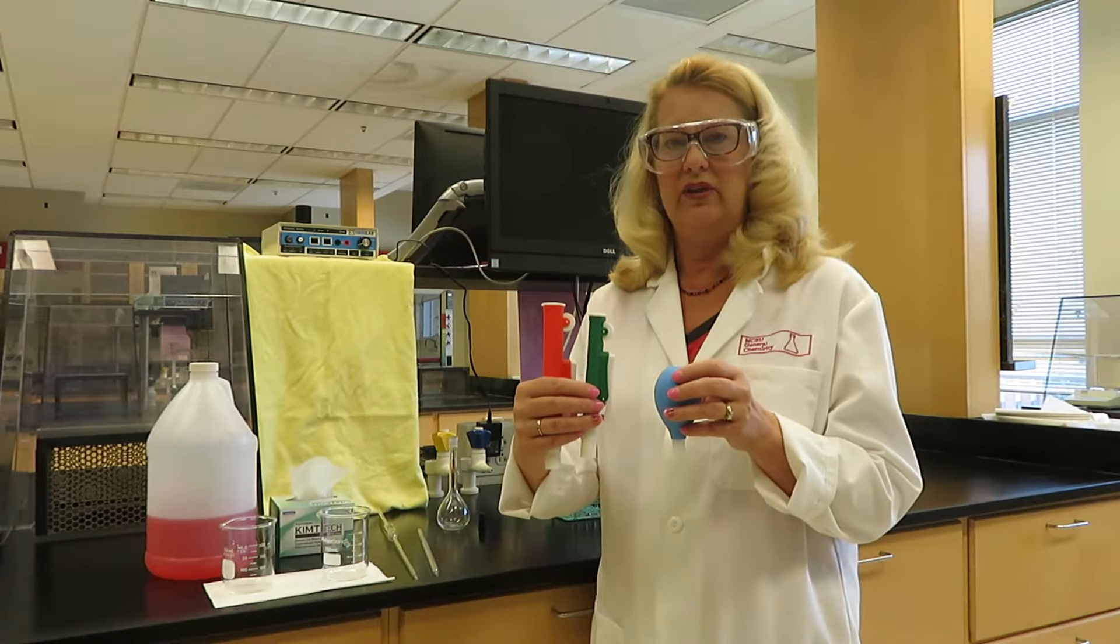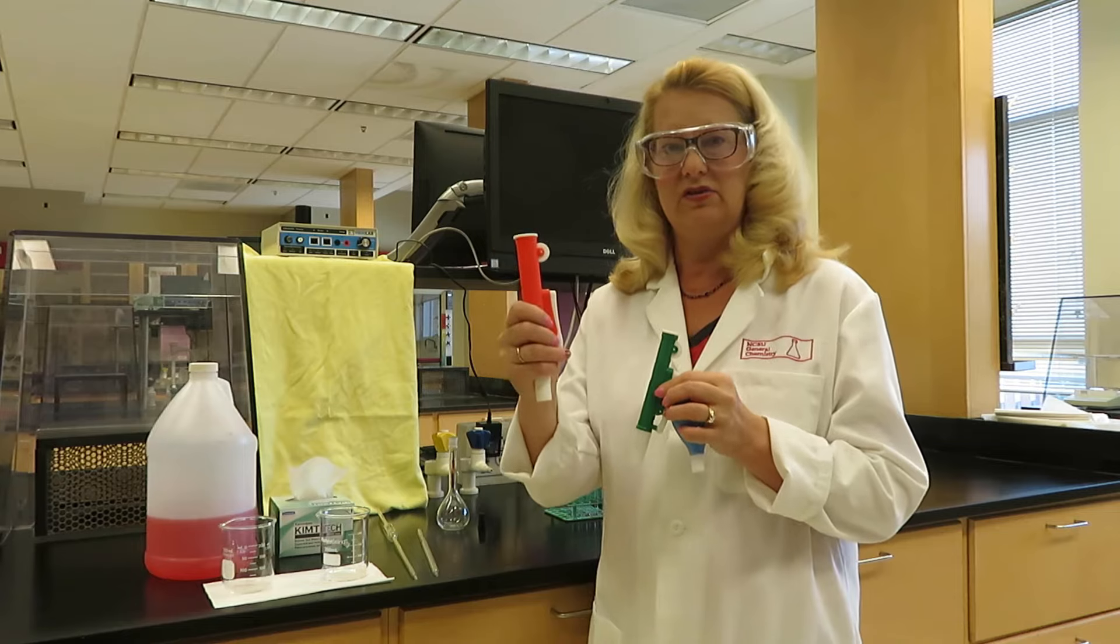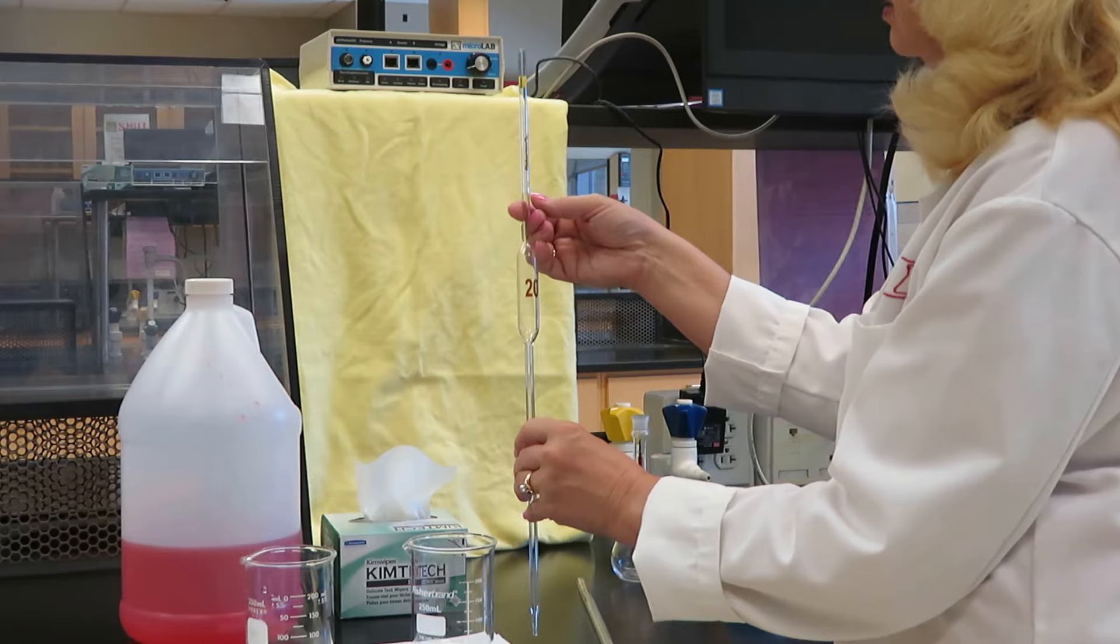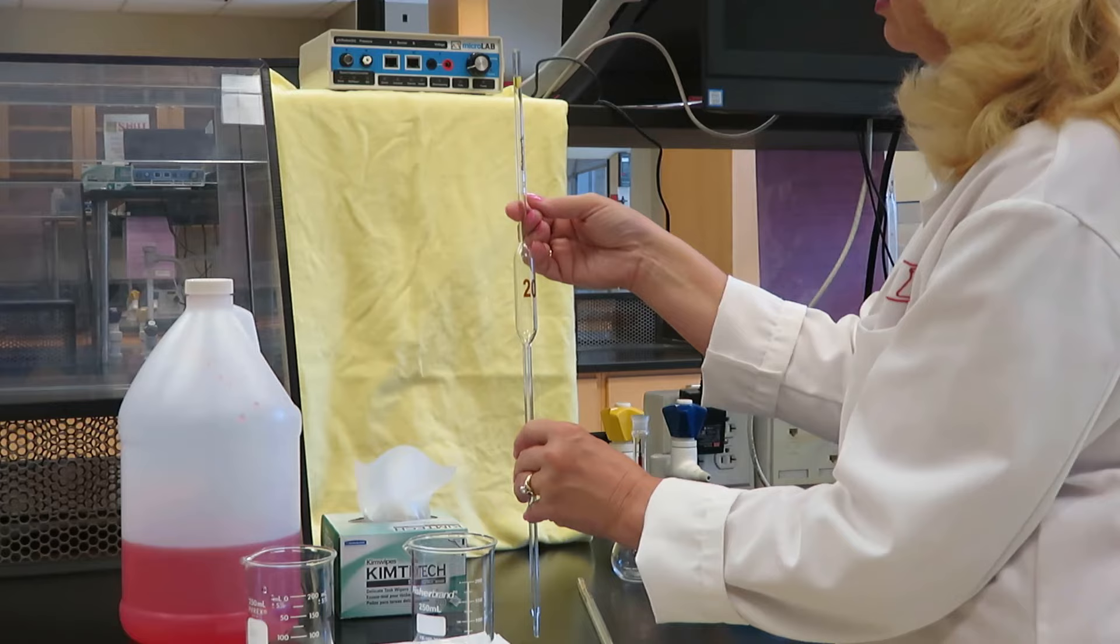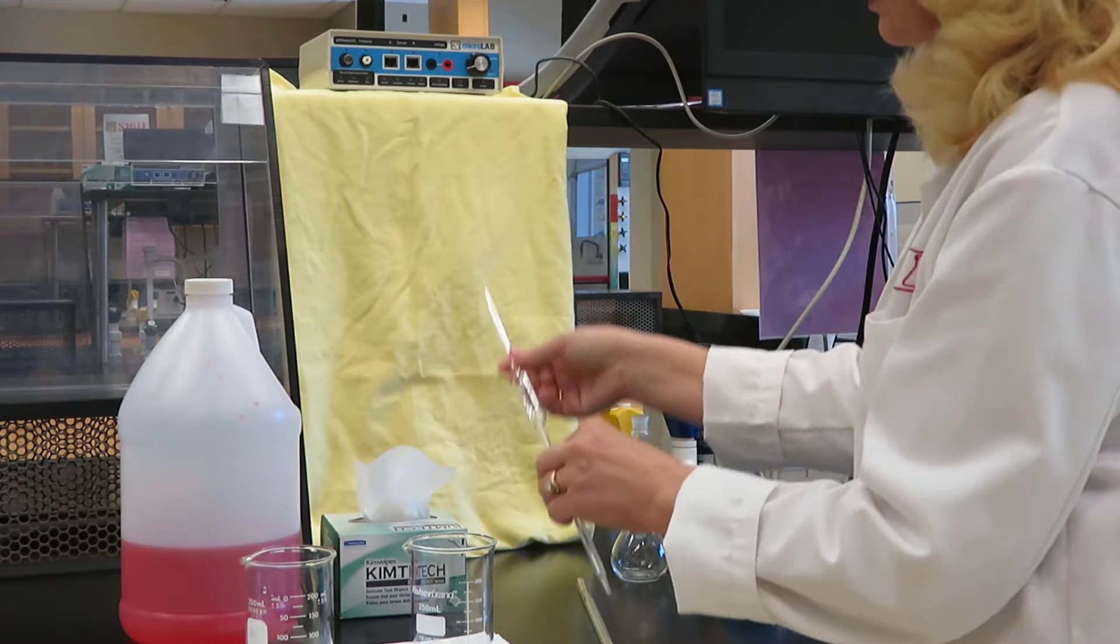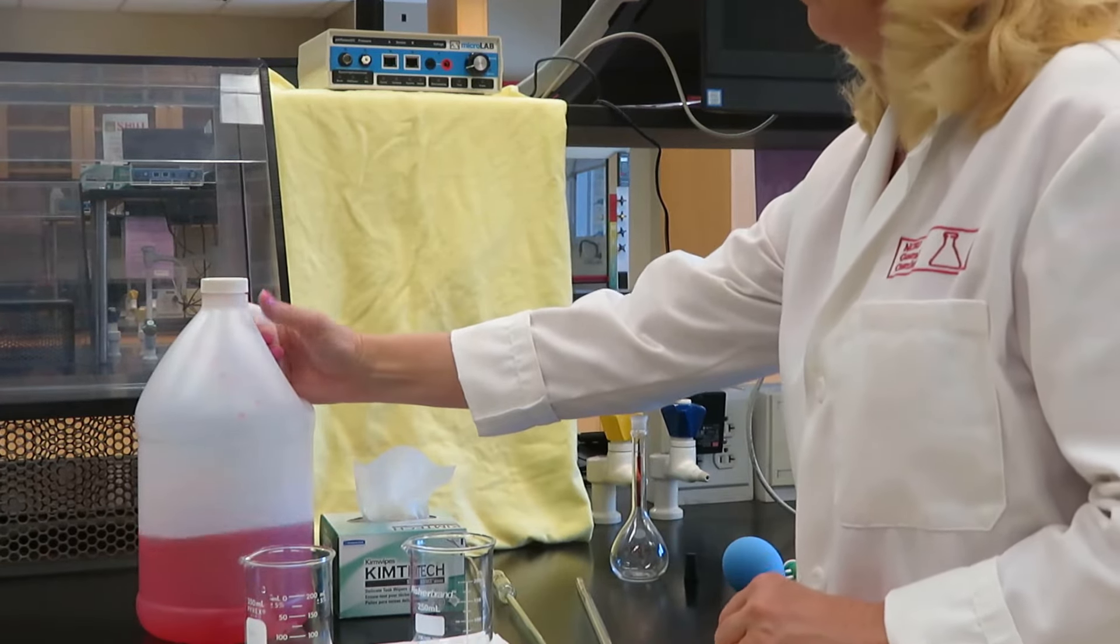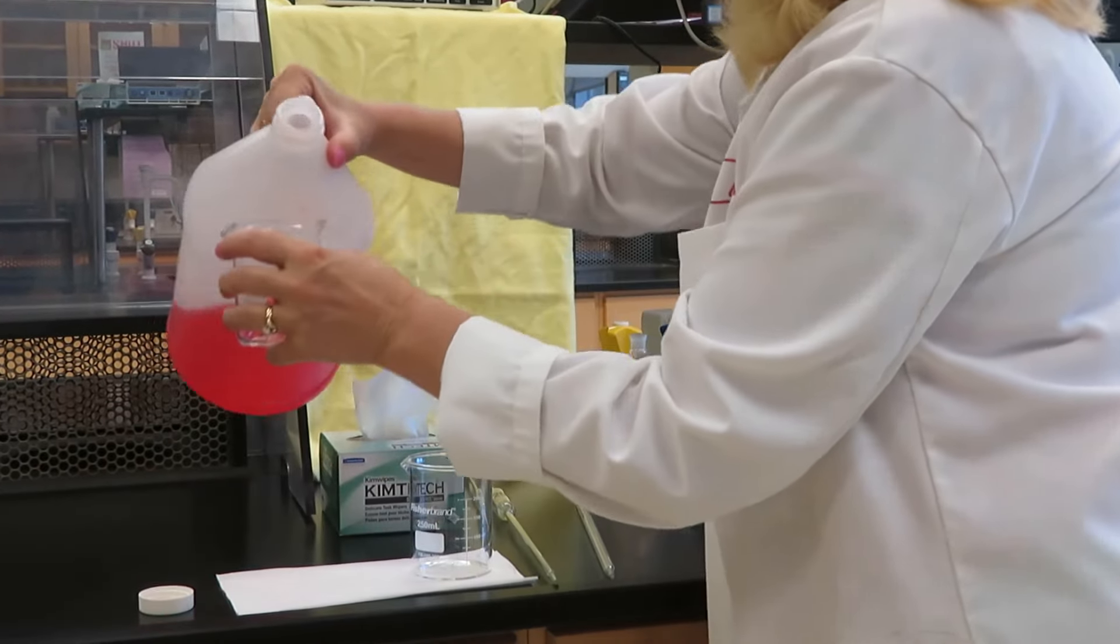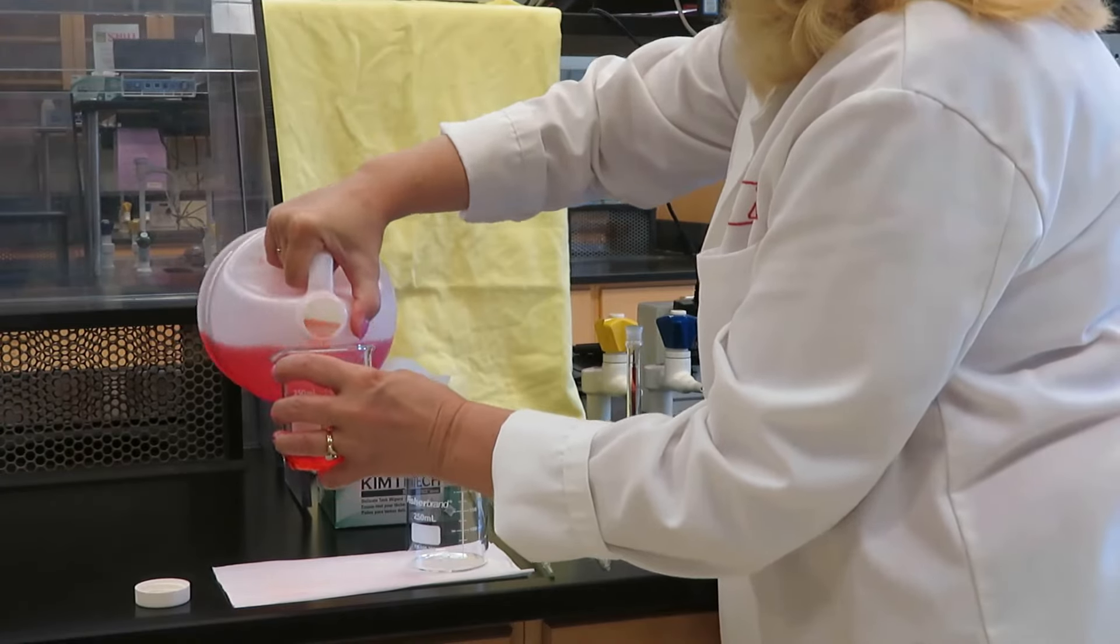Let's start by working with a 20 milliliter volumetric pipette, which means I'm going to use the red filler. The 20 milliliter volumetric pipette has a line right here, which indicates precisely 20.00 milliliters. I'll now demonstrate how to use this. First, never pipet directly from the stock bottle. I will take some of my solution and pour it into a clean, dry beaker.